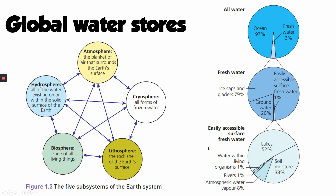The water in the atmosphere plays a really important role on our planet because water vapour is actually a greenhouse gas — so the amount of water vapour determines what our climate is like. The climate then goes on to determine things like how much water is stored in ice caps and glaciers, or how much ends up in the ocean. We shouldn't dismiss this 8% as a small amount; it punches above its weight in terms of significance.